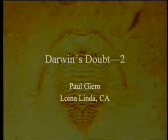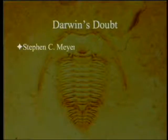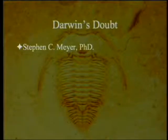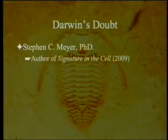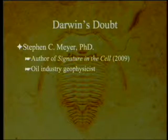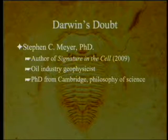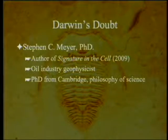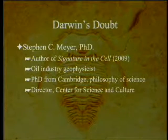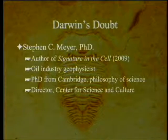Darwin's Doubt, part two. We've been looking at the book Darwin's Doubt, written by Stephen Meyer, PhD. He's the author of Signature in the Cell, which we went through not that long ago. He was originally an oil industry geophysicist, got his master's degree in that, and then got a PhD from Cambridge in the philosophy of science. He is currently the director for the Center for Science and Culture at the Discovery Institute.